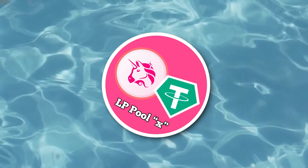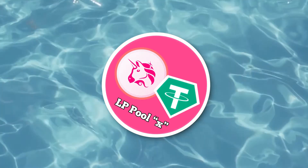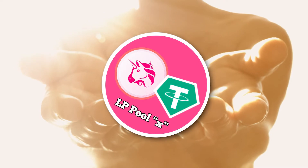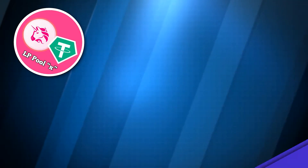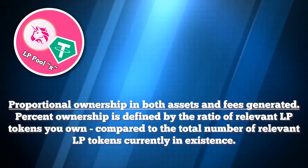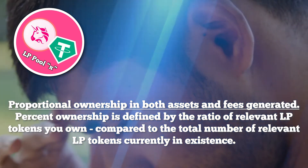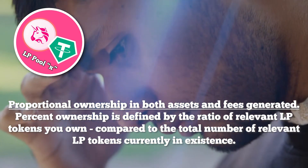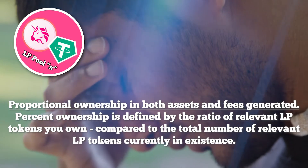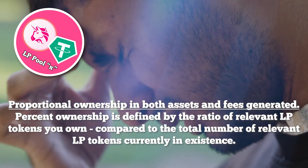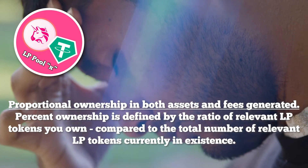You could sell that receipt to somebody else if you wanted to. Ownership of the LP tokens attached to the pool gives you proportional ownership in both the assets in the pool and fees generated by the pool, according to the ratio of how many relevant LP tokens you own versus the total number of relevant LP tokens currently in existence.